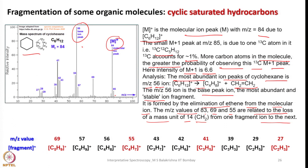All fragments are listed with mass-to-charge ratio from 69 to 32: CH3, C4H9, C4H8, C4H7, C3H7, C3H6, C3H5, C3H3, C2H5, and C2H3. You can clearly see all these fragments and their corresponding masses in this beautiful mass spectrum of cyclohexane.